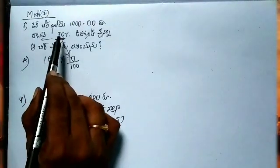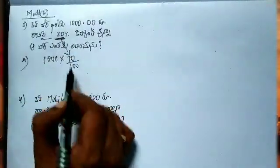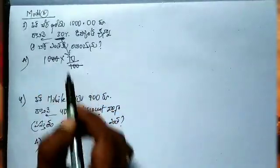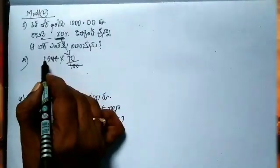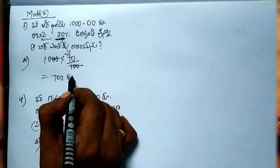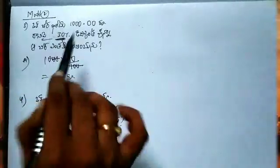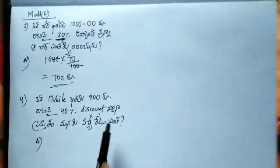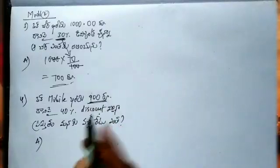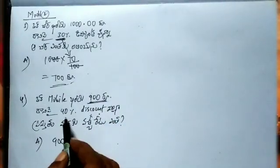30% discount — original rate is 70%. Percentage is by 100. 2 zeros cancel. 2 x 10 share. 30% discount solved.